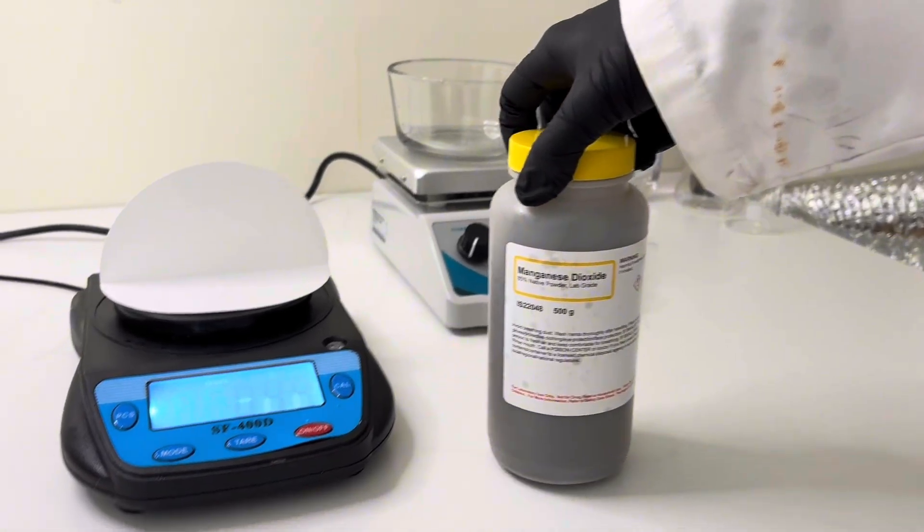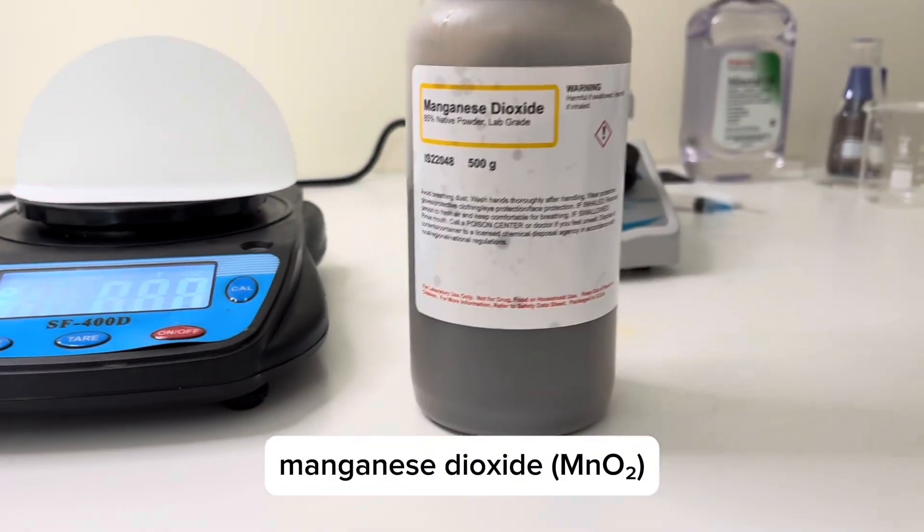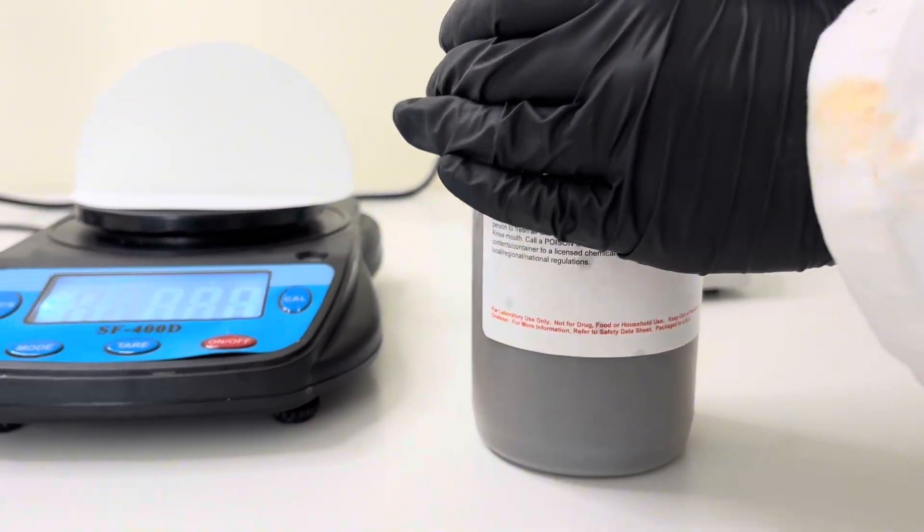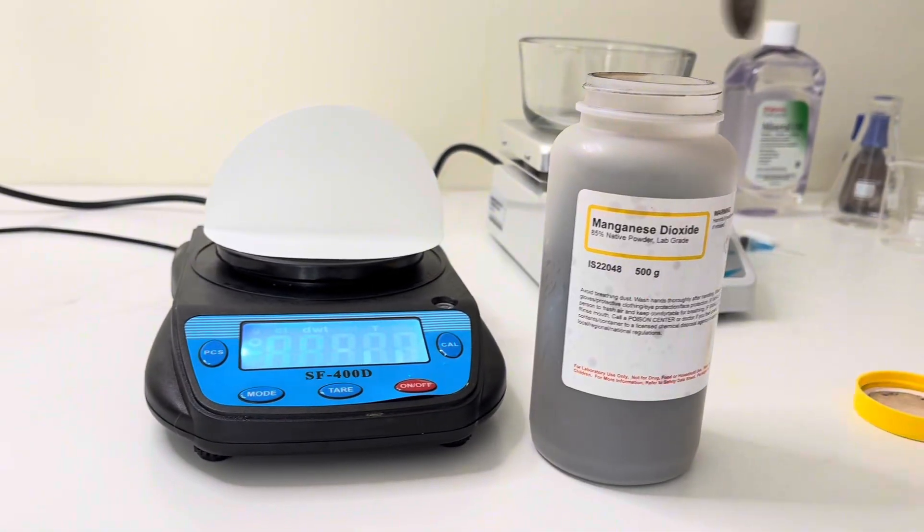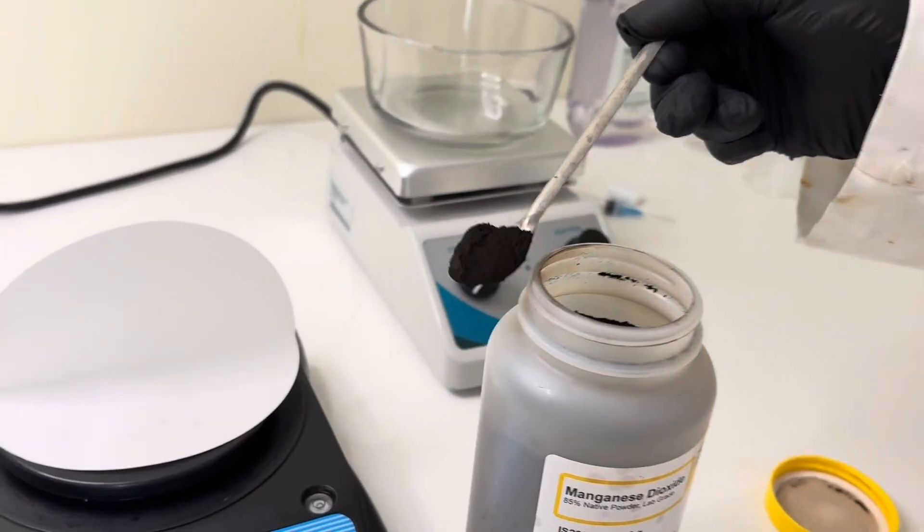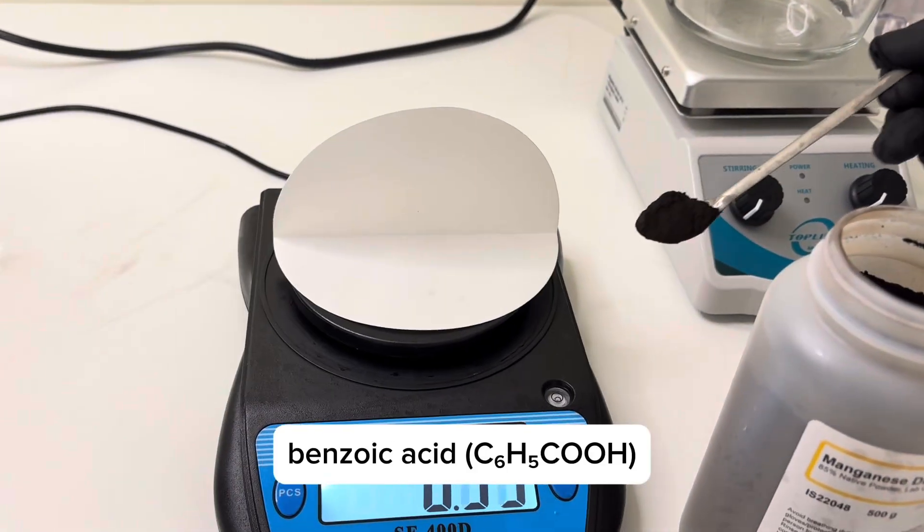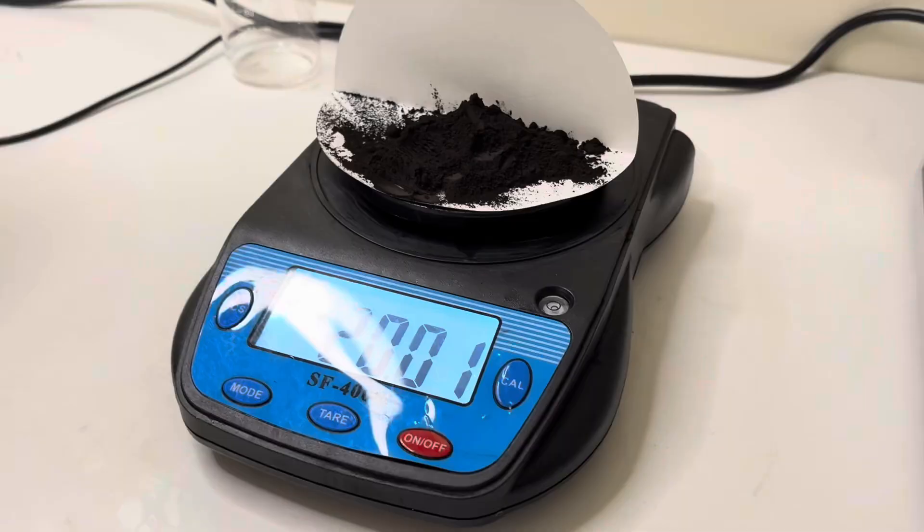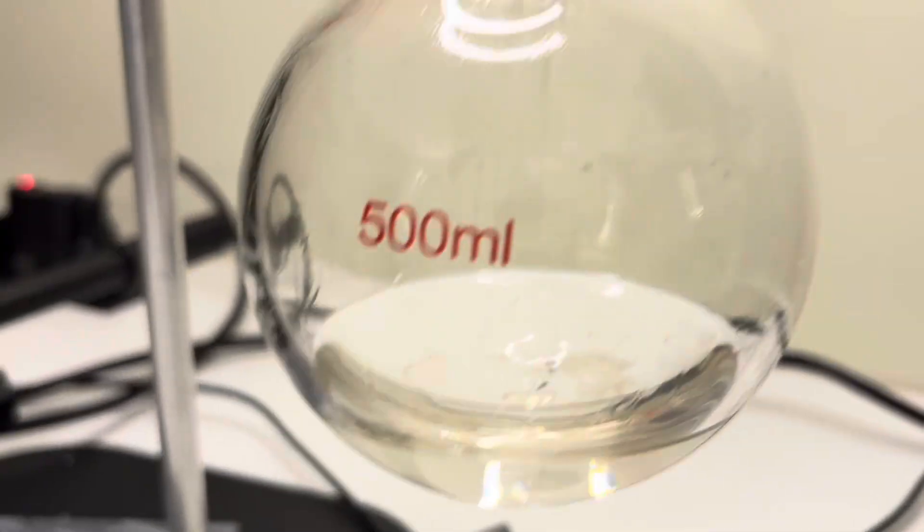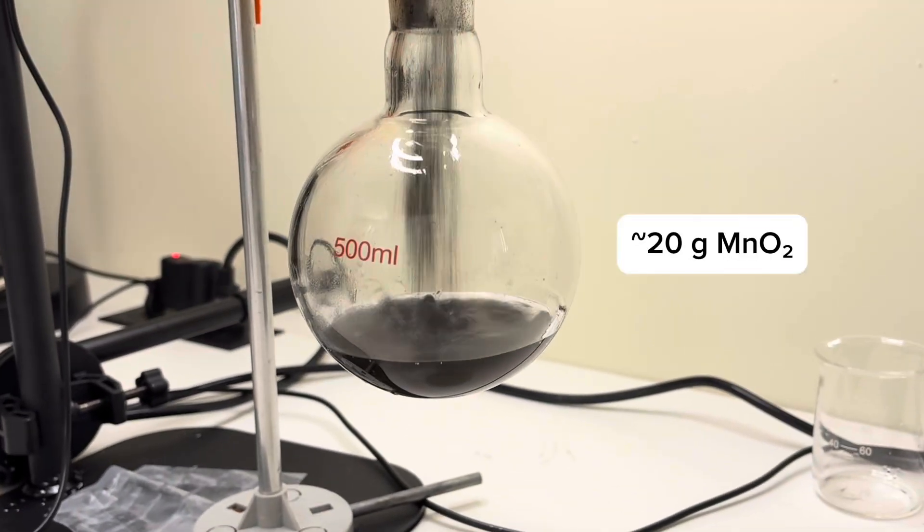For the oxidizer, I'm using activated manganese dioxide. It's a mild reagent that oxidizes primary alcohols into aldehydes, without pushing them further to carboxylic acids, like benzoic acid in this case. To ensure full conversion of the benzyl alcohol to benzaldehyde, I'll use 20 grams of manganese dioxide.